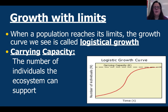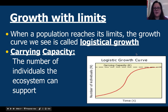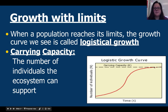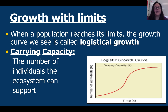When a population reaches its limits, the growth curve we see is called a logistic curve, or logistic growth. Looking at the chart, you can see that it doesn't just keep going up — it gets to a point where it can't keep growing anymore and goes off to the side horizontally. When it reaches this point, it can't grow past that limit. That is when it reaches what's called its carrying capacity — the number of individuals that the ecosystem can support.